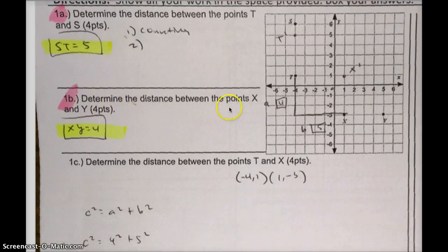Question 1b, determine the distance between the points X and Y. So here's X, and there's Y. It's a horizontal, so you can just count: 1, 2, 3, 4. XY is equal to 4.